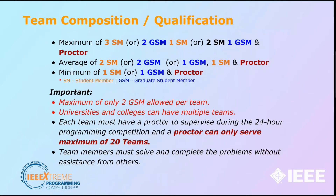Regarding team composition: you can have a maximum of three student members, or two graduate student members and one student member, or two student members and one graduate student member — all with a proctor. A minimum of one student member is required. Importantly, a proctor can only serve a maximum of 20 teams, so you cannot have more than 20 teams registered under a single proctor. If you are participating from SIAS-GST, make sure you register fast, because you can have a maximum of 20 teams under one proctor.